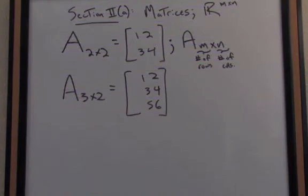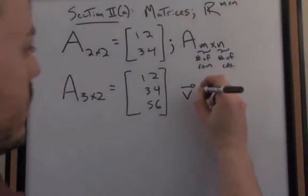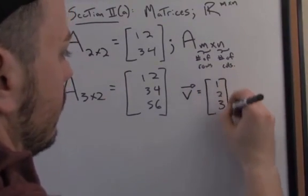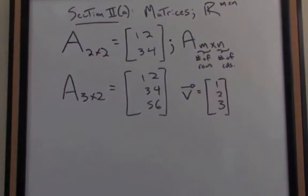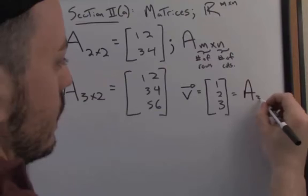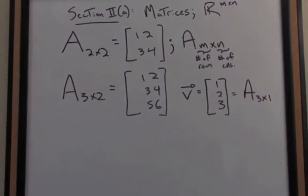Now it's worth mentioning here that a vector is really a kind of degenerate matrix. So for instance, if I have the vector one, two, three, that's a three-dimensional vector for sure. Well, I can think of that actually as a matrix with, in this case, three rows and one column.